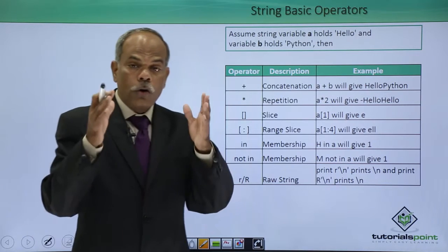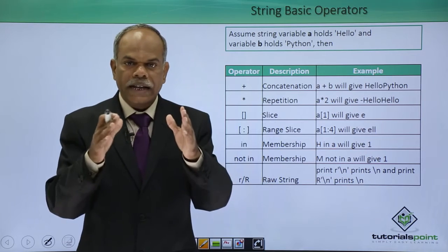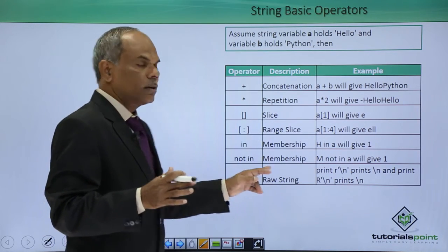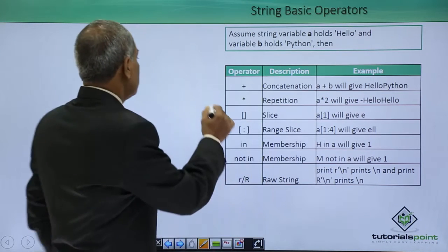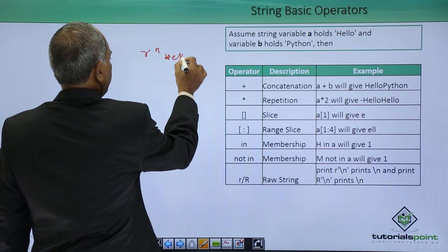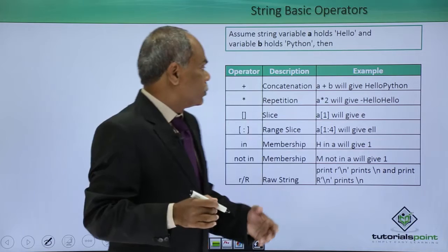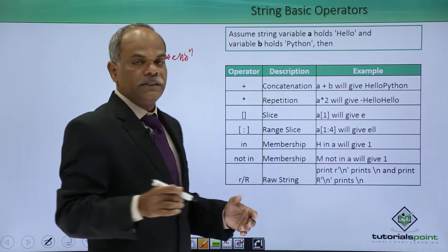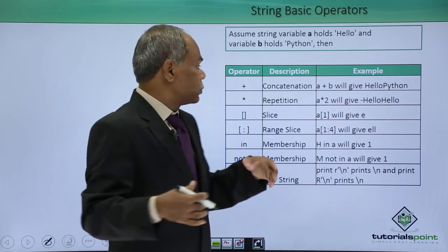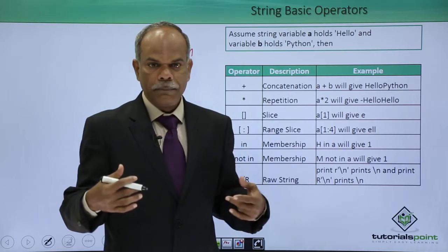And in order to form a raw string, you have to prepend that string with the character r or capital R. So if I say r hello, this will become a raw string. These are the different operators that operate upon string operands. The behavior of these string operands we shall study with the help of an example.